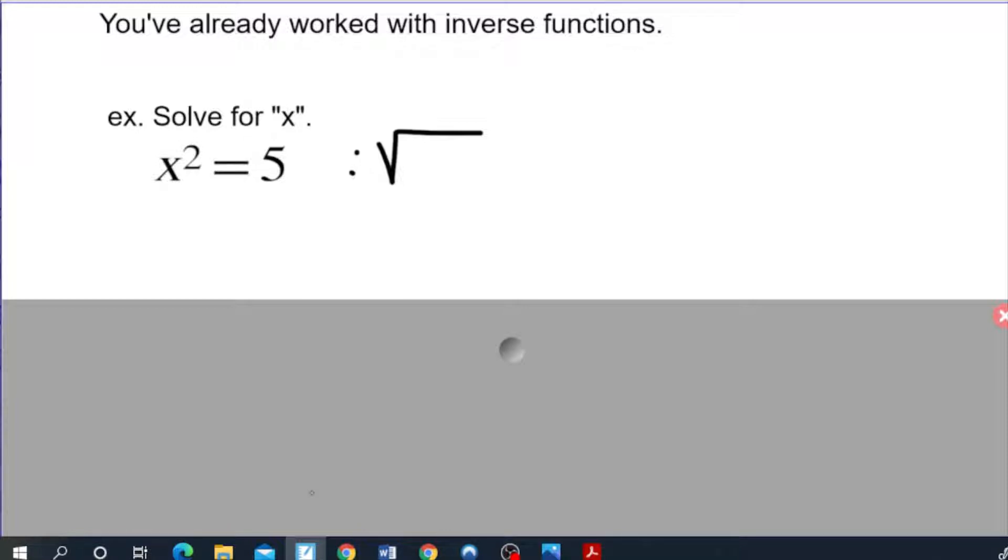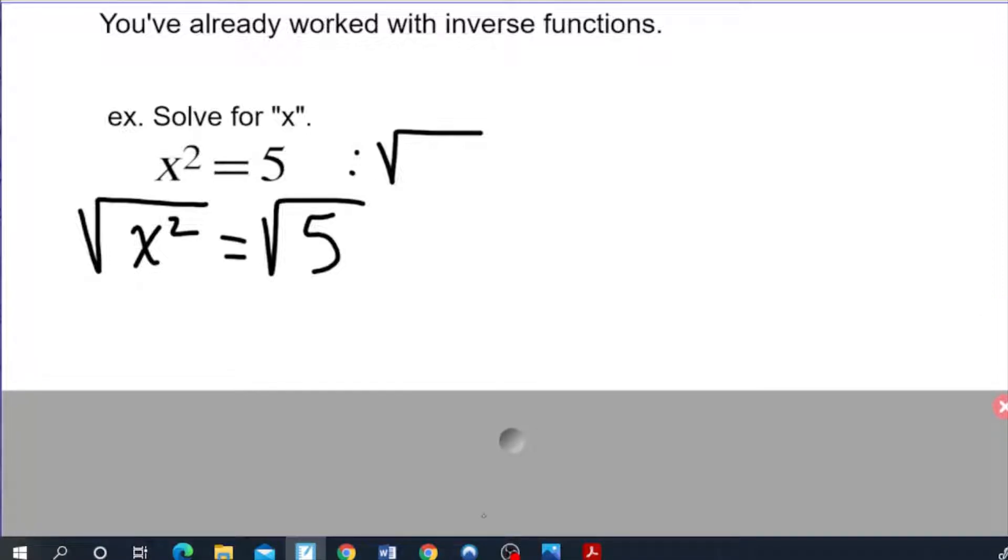What you do is you envelop the original function with its inverse. So the square root here is completely enveloping the x squared and what you do on one side of the equation you immediately do on the other side of the equation. At that point you have probably been taught that a square root of an x squared just gives you an x and what we have done is we have pulled out the x from the x squared by destroying the x squared with the root.